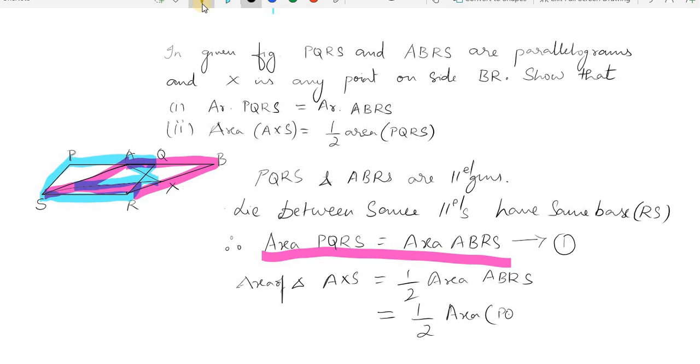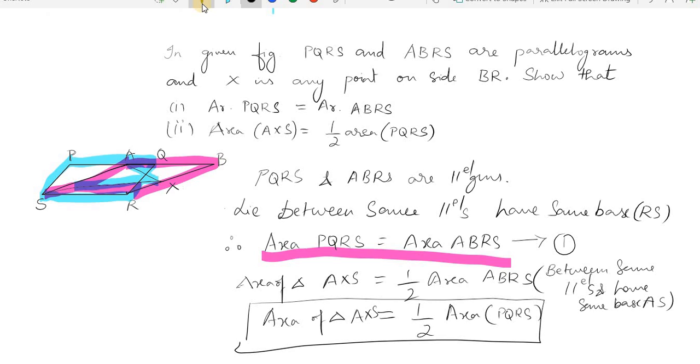So here too we will have to write the reason: between same parallels and having same base - but the base here is AS. So we have it: area of AXS is equal to half of the area of PQRS.